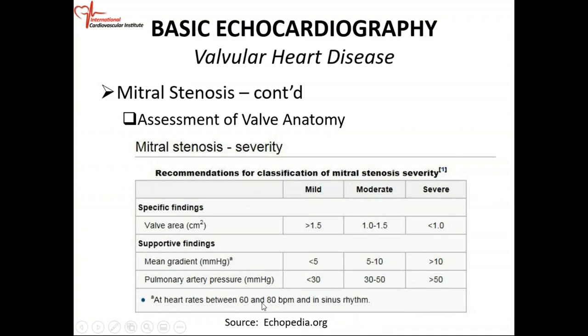Moving to the current criteria: a mitral valve area less than 1.5 cm² is severe; greater than 1.5 cm² is mild. Symptoms are very important — if the patient is symptomatic, it's almost always severe. The key point about mitral stenosis is that a patient may be okay at rest, but once they exert themselves the gradient across the valve increases and they become more symptomatic. The next session will cover the current criteria in detail.